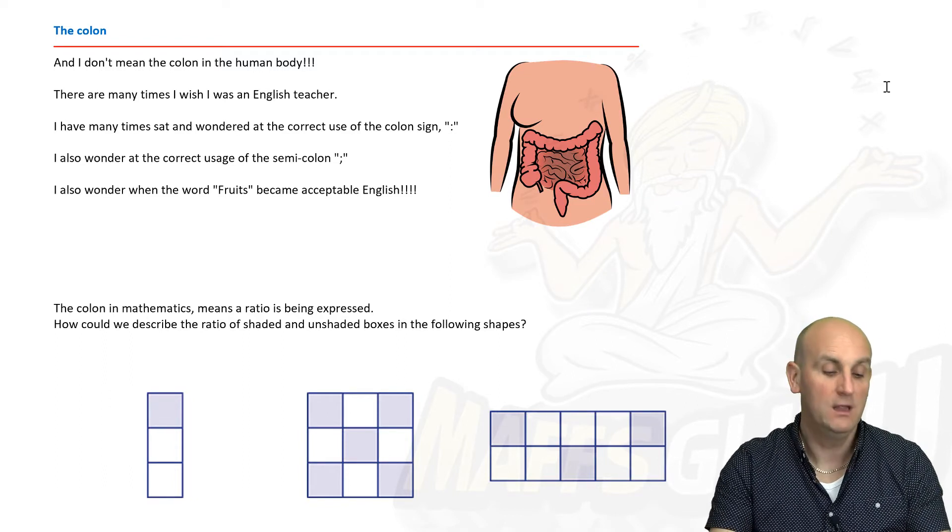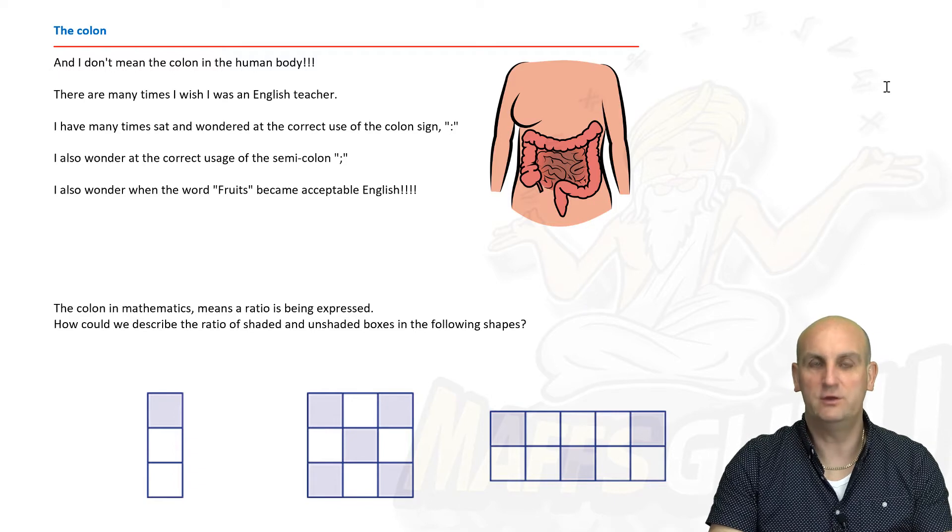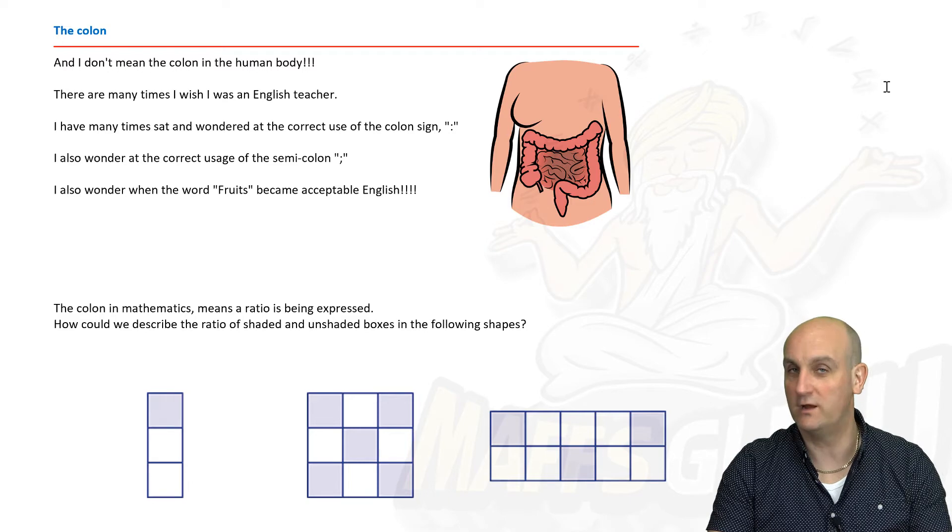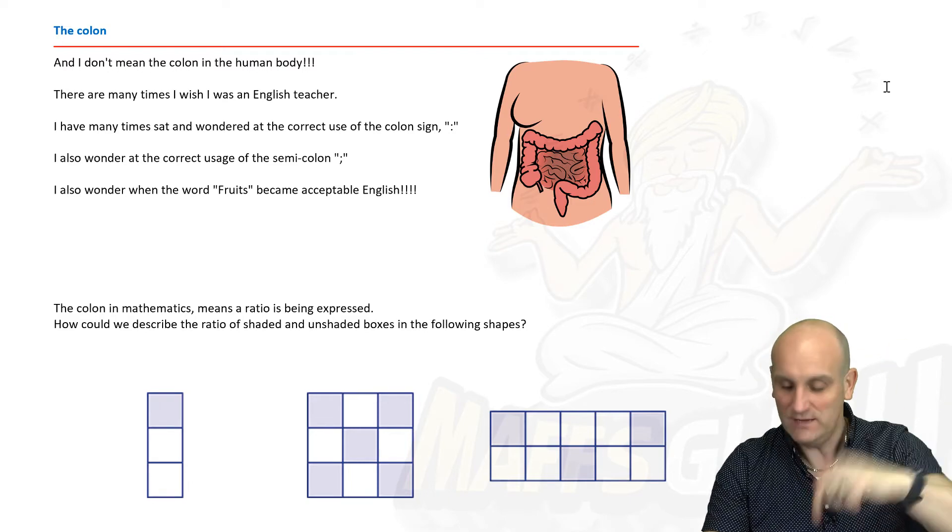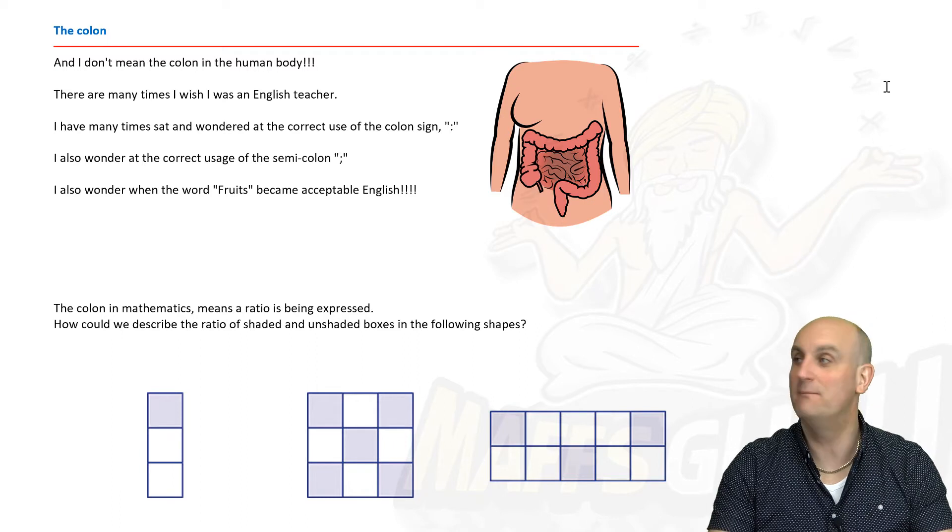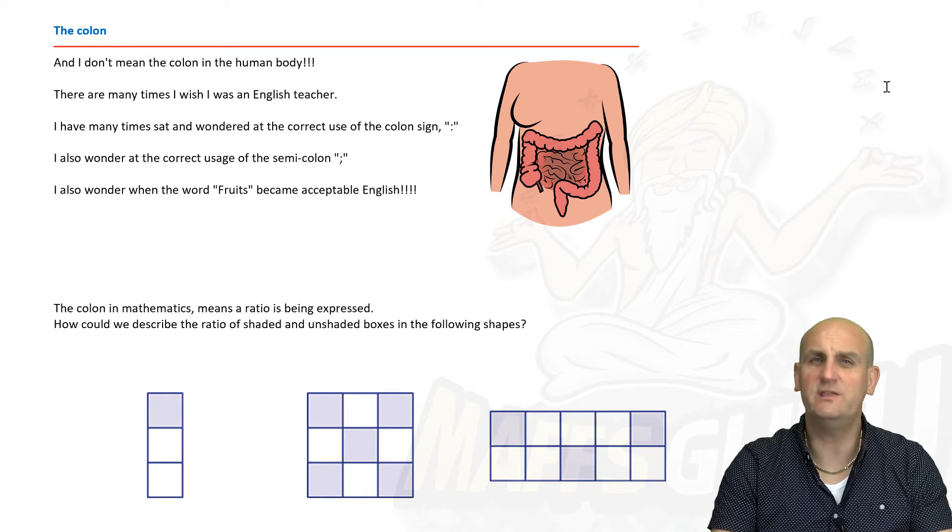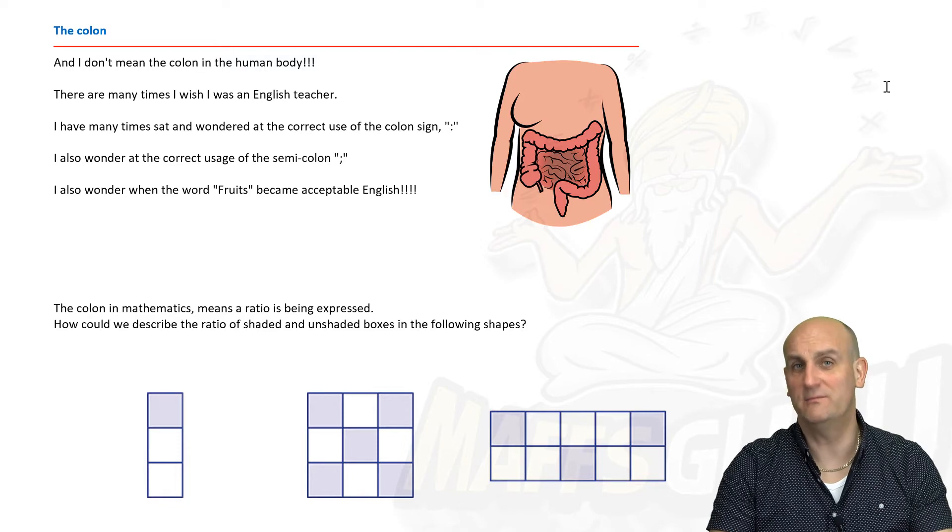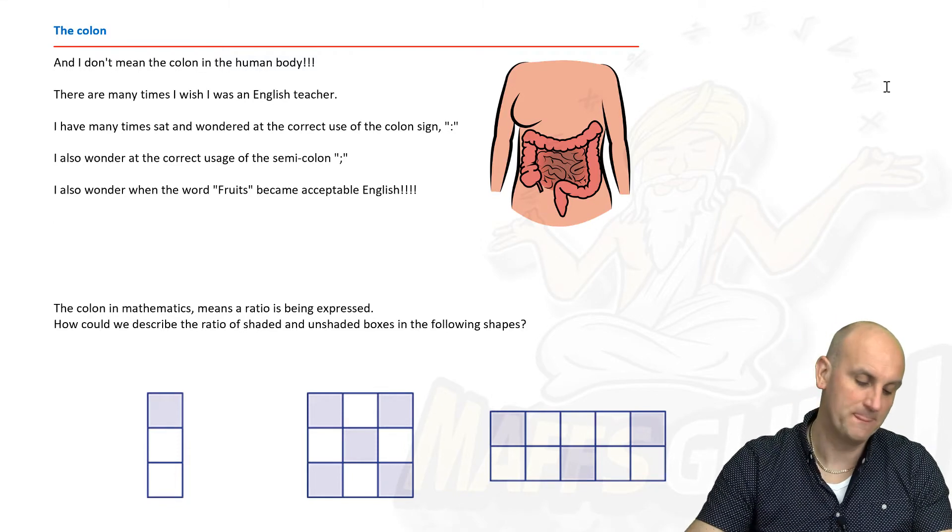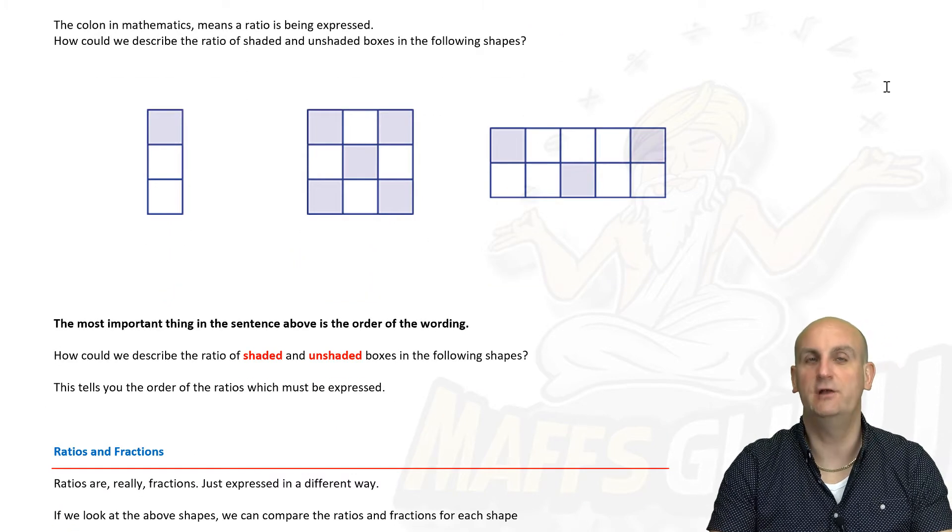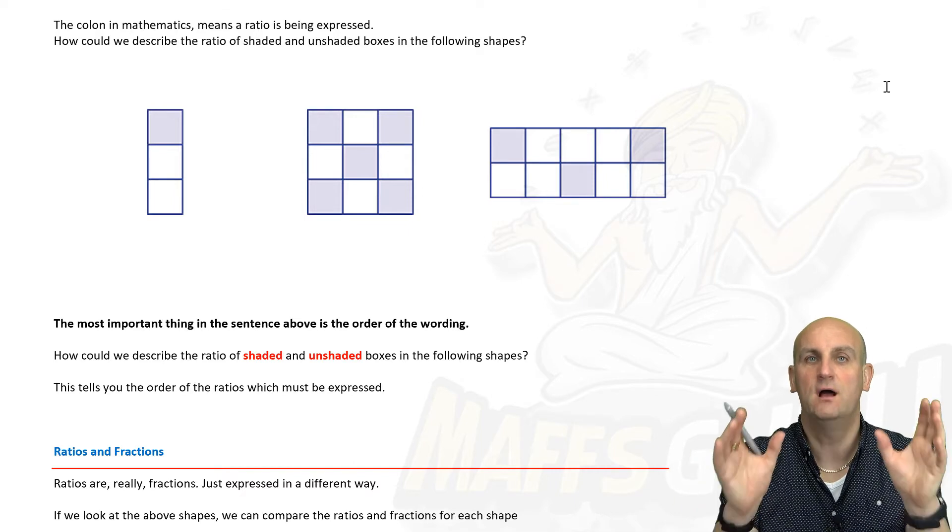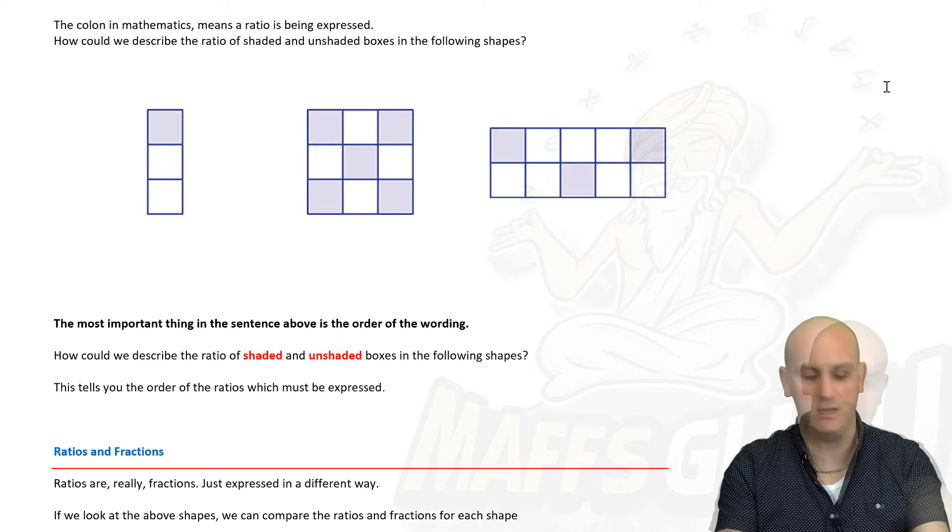Nothing to do with the human body, thankfully. If I was an English teacher, I wish I would know what the real way to use a colon is. If you know, let me know, leave a comment below. Colon, semicolons, no idea. I punctuate my writing with these things in the odd hope that I get them correct. But maths I do know where a colon is. So the colon in math is basically just meaning a ratio is being expressed. That's it. It means two things are in a certain ratio.